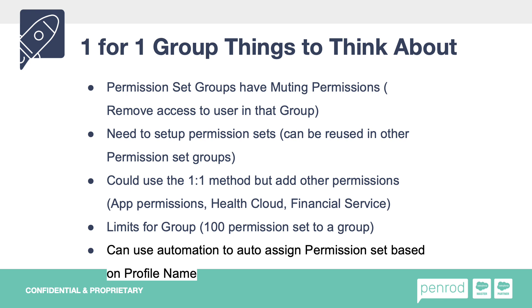Just a reminder, there is a limit — you can only have up to 100 permission sets in a group. You can also use automation to auto-assign the permission set group based on a profile name. It's the same concept as before but with a permission set group.